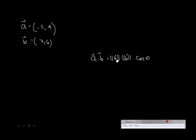So, what we need is the magnitude of a and the magnitude of b. The magnitude of a, we can find it using the components. It's simply the square root of negative 2 squared plus 4 squared and that's 4 plus 16, 20 square root.